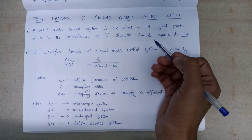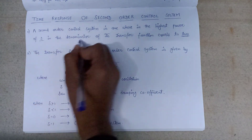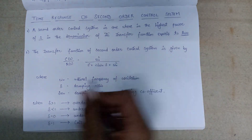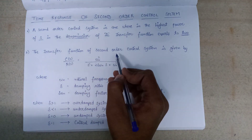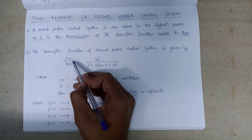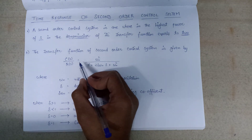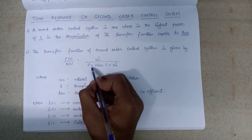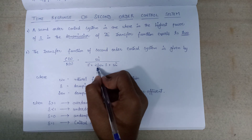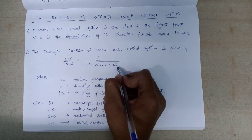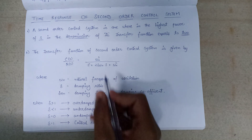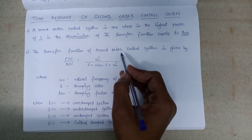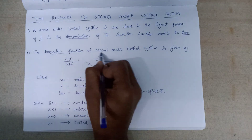So if the transfer function is given, then the highest power of s in its denominator will be equal to 2 only. For example, the transfer function of a second order control system is given as C(s) over R(s) equals omega_n squared over s squared plus 2 delta omega_n s plus omega_n squared. This is the expression of the transfer function of the second order control system.